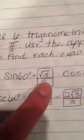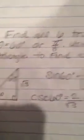So sine is radical 3 over 2 because it's opposite over adjacent. And cosine is 1 over 2 because it's adjacent over hypotenuse. Tangent is just radical 3 because radical 3 over 1 is just radical 3.